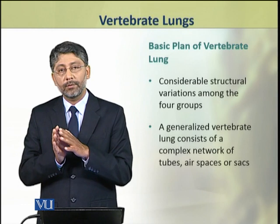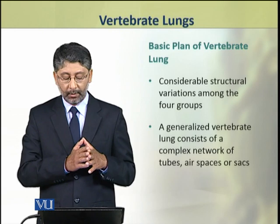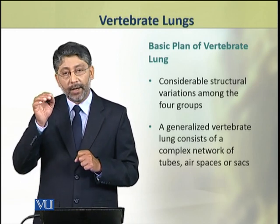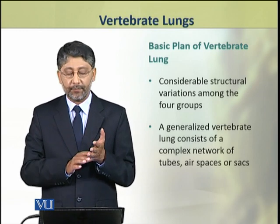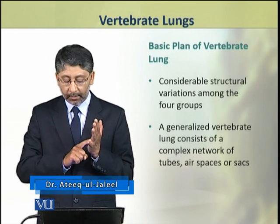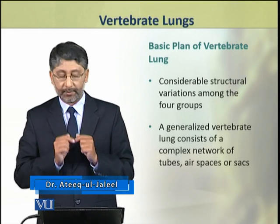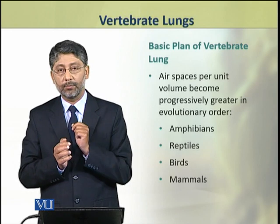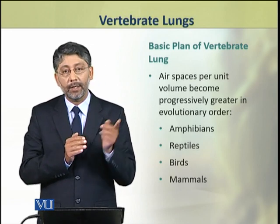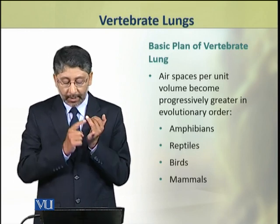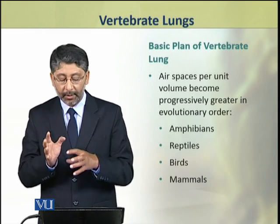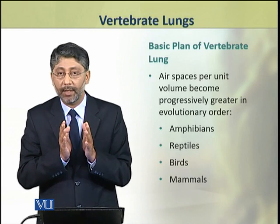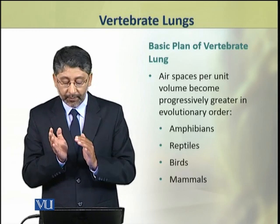We shall discuss the basic plan of the vertebrate lung. Although there are considerable variations among the four groups of vertebrates, the generalized structure of the lung consists of a complex network of tubes and airspaces or sacs. The number of airspaces per unit volume becomes progressively greater in the evolutionary order: amphibians, reptiles, birds, and mammals. That is, the number of airspaces per unit volume is least in amphibians and greatest in mammals.